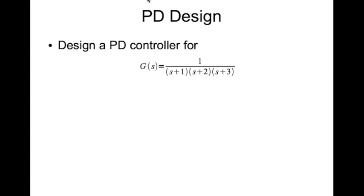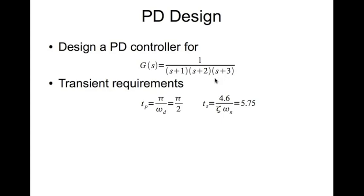In this short video we'll look at proportional derivative or PD design with the help of an example. We have a plant transfer function 1 divided by (s+1)(s+2)(s+3), and the transient requirements are: peak time should be pi/2 seconds and settling time should be 5.75 seconds. A PD controller is used to achieve a desired transient requirement.